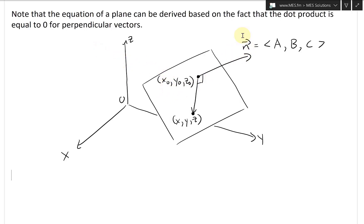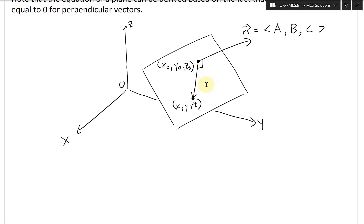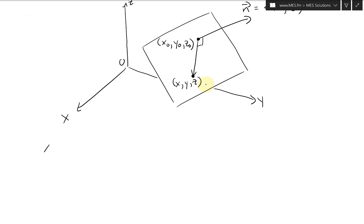So thus, the dot product of these two perpendicular vectors, where we can get the position vector from here to here by subtracting. So what we'll get is capital A, capital B, capital C, dot, and then the position vector of this vector right here.